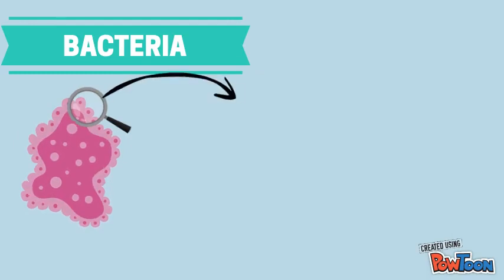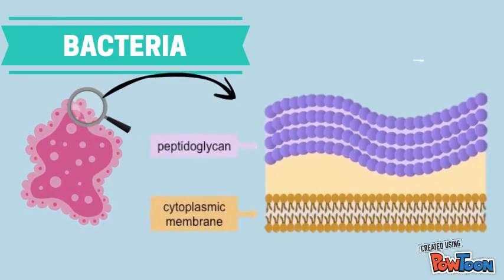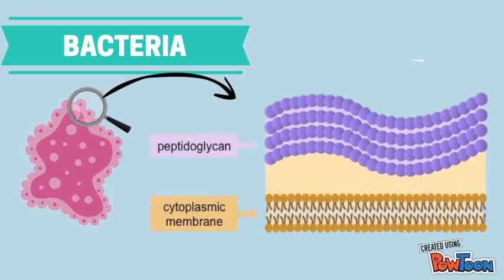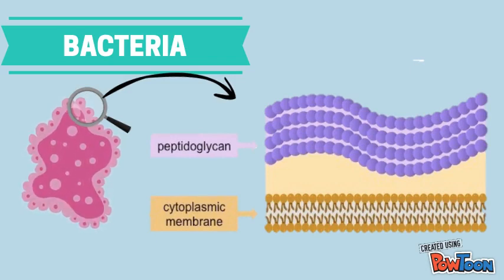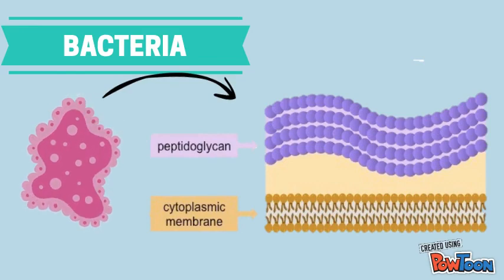Streptococcus thermophilis is a gram-positive bacteria. This means that they are positive in gram stain tests and appear purple in color. This is because gram-positive bacteria have a thick peptidoglycan cell wall that can retain the dye.